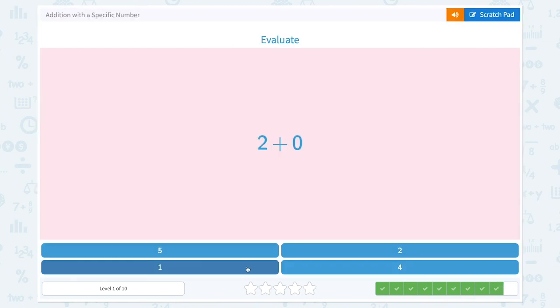Nice work. Evaluate 2 plus 0. 2 plus 0. So we start with 2 and count on, but we don't have anything to count, so the answer is 2.